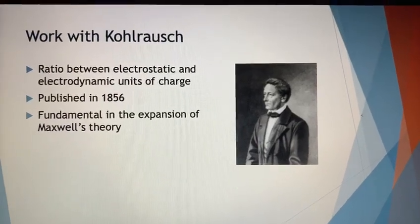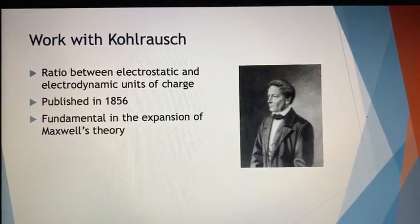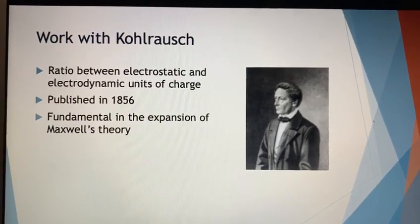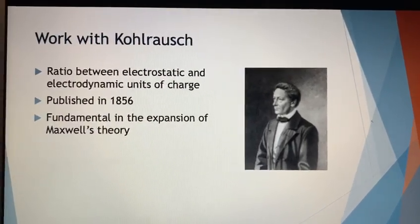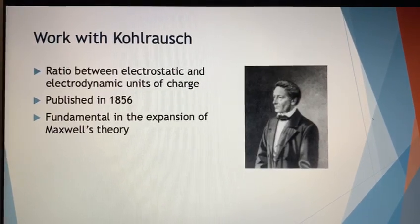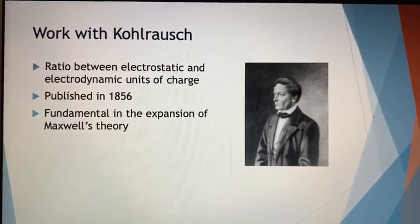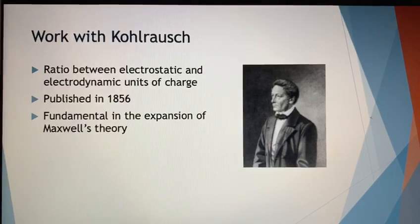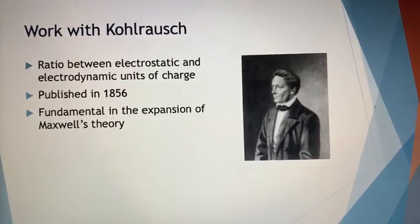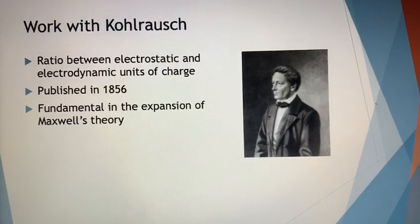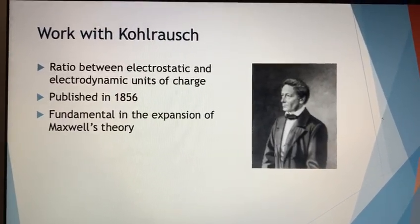Apart from working with Professor Gauss, he also worked with Professor Kohlrausch, who was also a professor at the University of Göttingen. Along with him, he found the ratio between the electrostatic and electrodynamic units of charge, and they published this work in 1856. This work was believed to be the basis of the expansion of Maxwell's theory, which was related to the fact that light is considered as an electromagnetic wave.